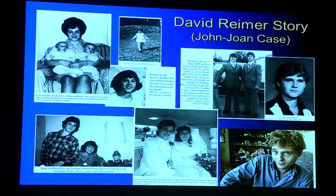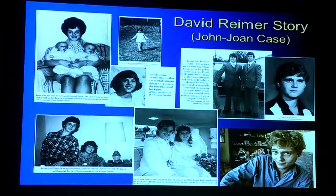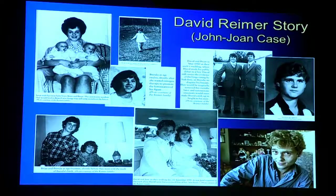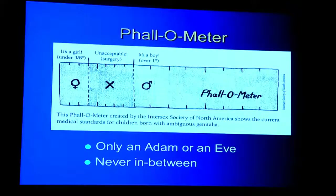Milton Diamond found David Reimer in the mid-1990s living as a man. David had no idea his case was a famous medical case, or that it had become the model for standard care for babies with ambiguous genitalia, micropenis, or destroyed penises. He had no idea that thousands of intersex babies all over the world had their genitalia mutilated, were lied to, and raised in a gender that didn't feel right. When David understood this, he decided to cooperate with Milton Diamond and came forward with his story — this was the beginning of the end for John Money and his bogus theory.